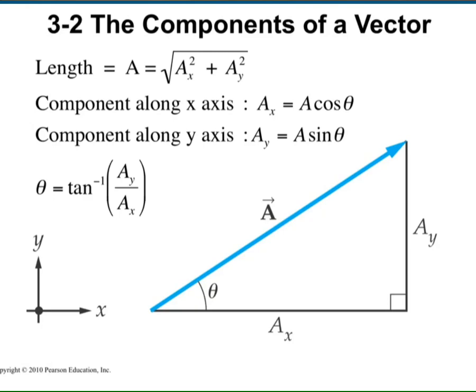Suppose you are given the components of a vector. To find its length or magnitude, just take the square of each component, add them, and take the square root. This is the magnitude or length of your vector, and as I said, it is always a positive quantity — it cannot be negative.